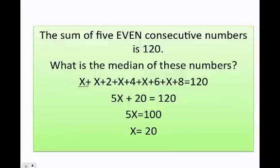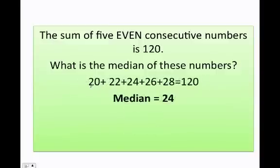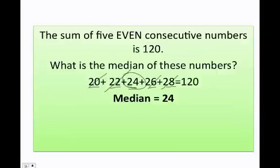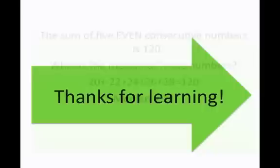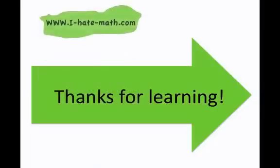Substituting x equals 20, our five numbers are 20, 22, 24, 26, and 28. For the median, eliminate the extremes until you reach the middle number — the median is 24. Consecutive number problems are very easy; you just need to practice and understand how to set them up. Thanks so much for learning, see you next time.